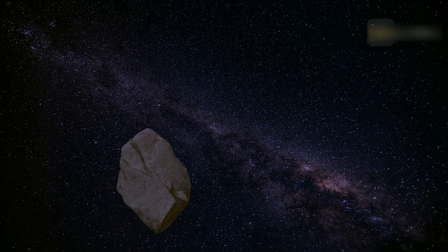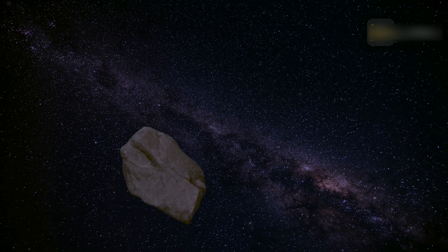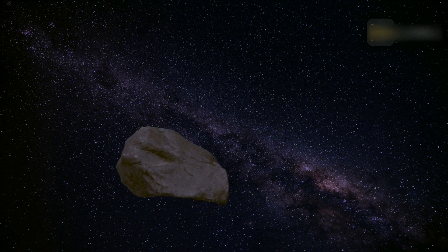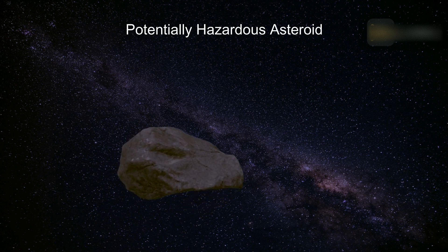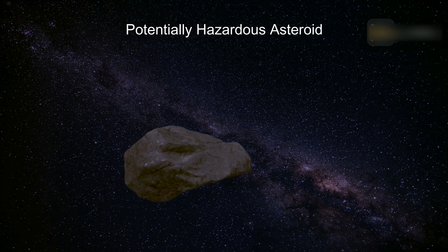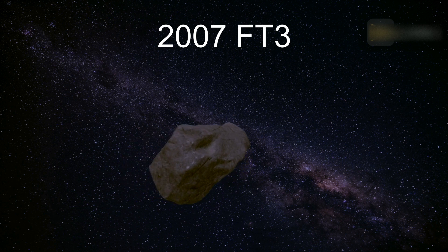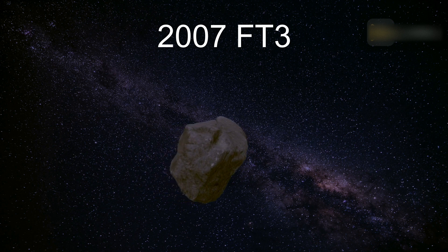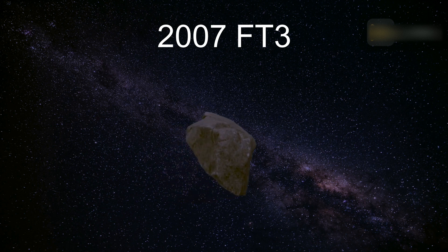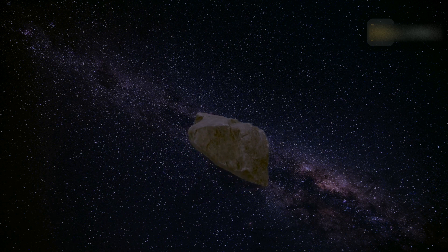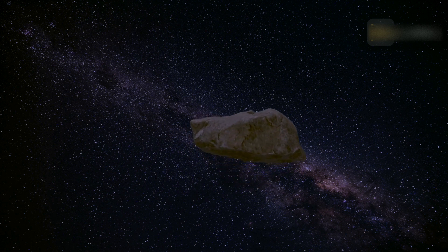NASA classifies asteroids that orbit within 30 million miles or 50 million kilometers of Earth as near-Earth objects. But within this population of space rocks is a subgroup of particularly worrisome objects that are so large and orbit so closely to Earth that they could pose a real threat to our planet if a direct collision were to occur. NASA calls these troublesome rocks potentially hazardous asteroids or potentially hazardous objects.